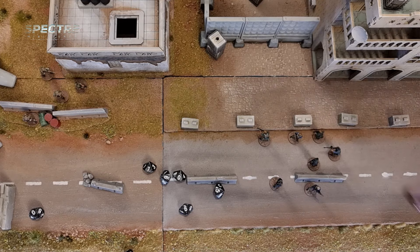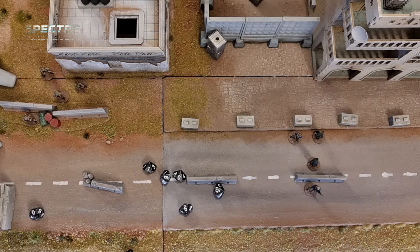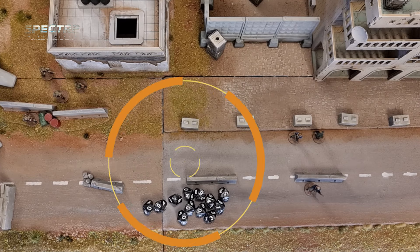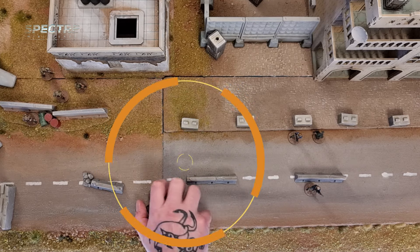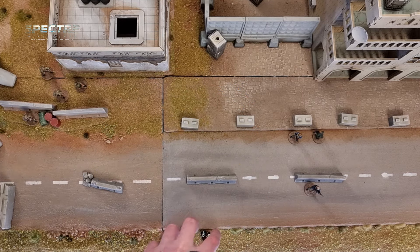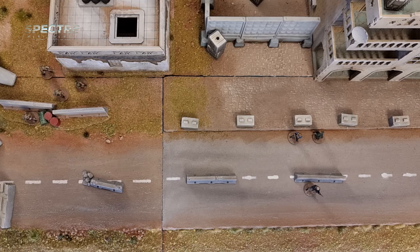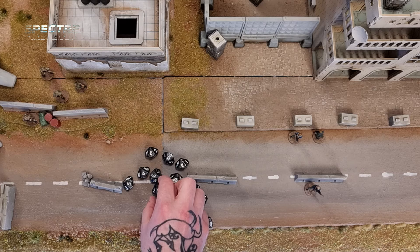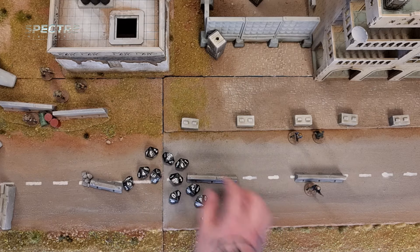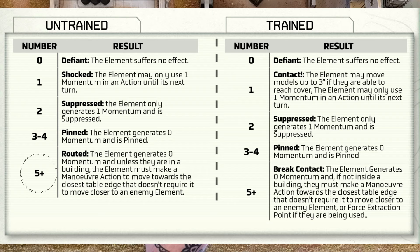This stress test is slightly different because there was one successful situational awareness test, which increases the element's stress by one — so the stress goes up from its starting value of five to six. We're rolling one dice for every accurate shot and one for each casualty: there were seven accurate shots and five casualties, which is a total of twelve dice. They need to score a six plus on each of these to pass. They have seven failed rolls, and comparing this to the untrained stress chart, a result of five or more failures is routed. This element has effectively been destroyed.